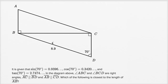They get into the meat of this actual diagram. In the diagram above, angle ABC and angle BCD are right angles, and they show us that right over here. This is angle ABC, angle BCD. And then they say that segment AC is parallel to BD.